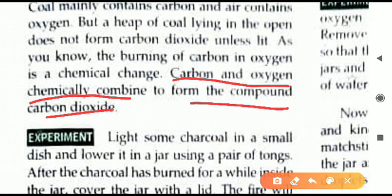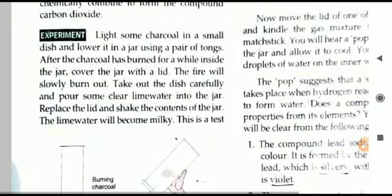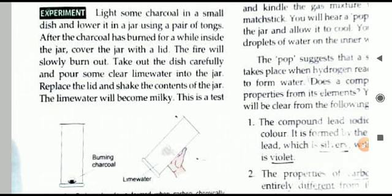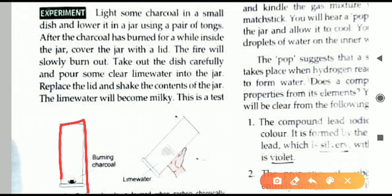Carbon and oxygen chemically combine to form the compound carbon dioxide. An experiment is given for this. We have to light some charcoal in a small dish. As you can see in the diagram, they have taken some charcoal in a small dish at the bottom and we have to burn it. After it has started to burn, we have to keep a jar above it — we cover the burning charcoal with a jar.